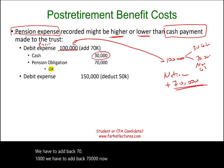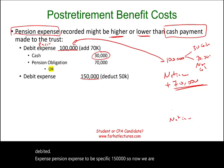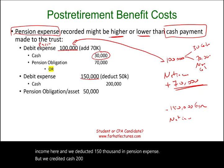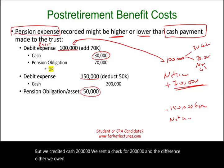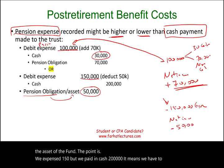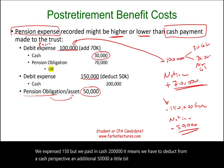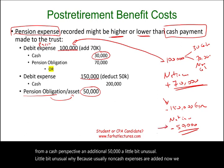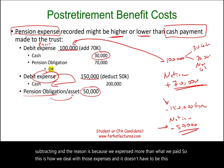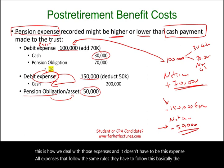Now let's assume another scenario: we debited pension expense $150,000, but we credited cash $200,000 — we sent a check for $200,000. We expensed $150,000 but paid in cash $200,000, which means from a cash perspective we have to deduct an additional $50,000. This is a little unusual because normally non-cash expenses are added — now we are subtracting, because we paid more cash than we expensed.